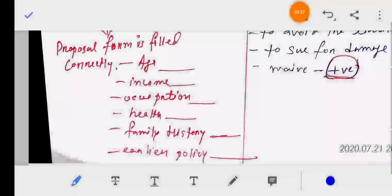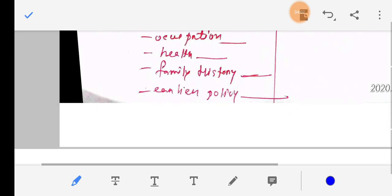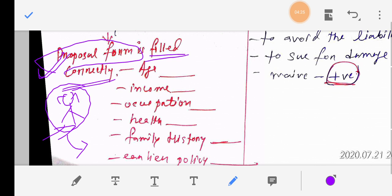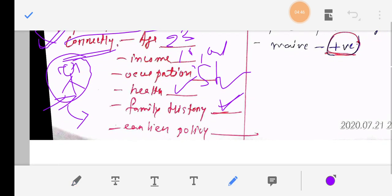Utmost good faith. The duty to disclose material facts comes to an end when the proposal form has been filled correctly. The duty comes to an end when the proposal form is completed. The insurance policy is issued when the proposal form is filled correctly.